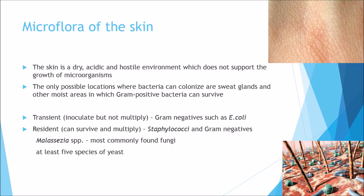The microflora of the skin: the skin is a dry, acidic, and hostile environment which does not support the growth of microorganisms. The only possible locations where bacteria can colonise are sweat glands and other moist areas, where gram-positive bacteria can survive. Transient bacteria can inoculate but cannot multiply — these include gram-negatives such as E. coli. Resident bacteria, such as Staphylococcus, can actually survive and multiply. You can also get about five different species of yeast on the skin.